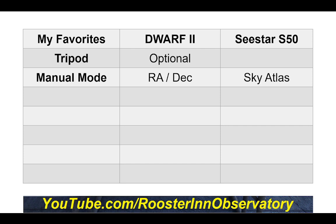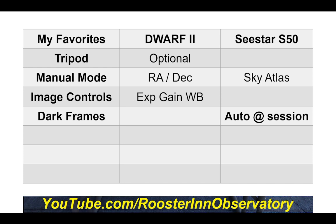Unfortunately, the Sea Star's Sky Atlas is graduated in altitude and azimuth, not RA and declination, so I have to do that translation elsewhere. Third, image controls — being able to manually set exposure, gain, and white balance on the Dwarf is a biggie; I often want to nudge exposure one way or another and can't really do that on the Sea Star. Fourth — and far and away my biggest plus of all 48 parameters compared — is the Sea Star's automatic dark frames. I don't have to worry about them at all. A close second is the Sea Star's excellent autofocus for deep sky objects.